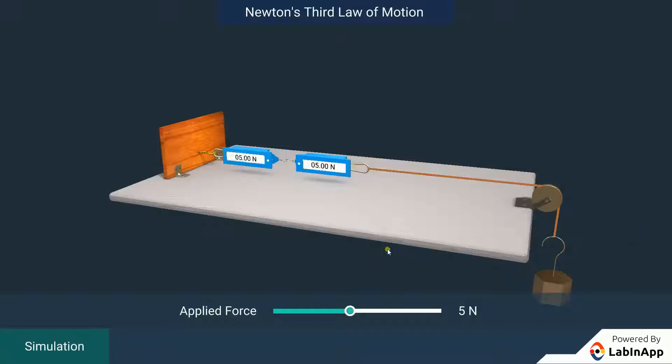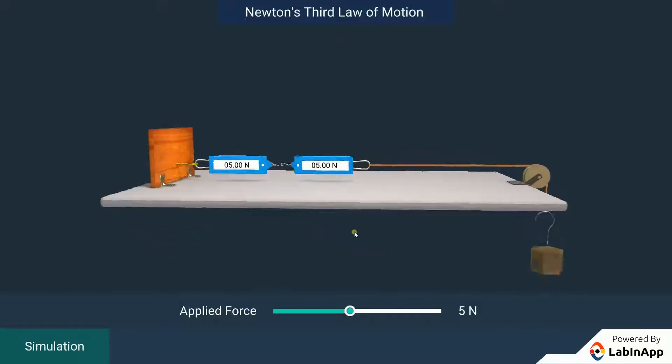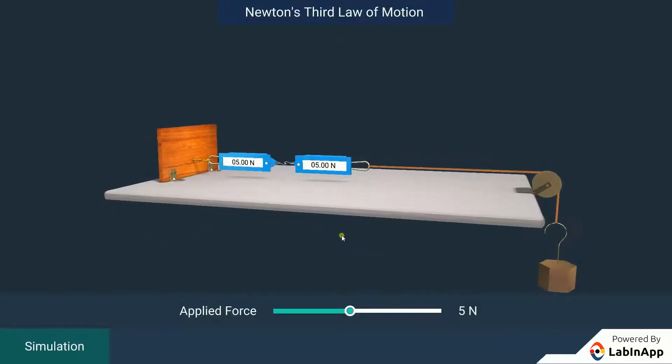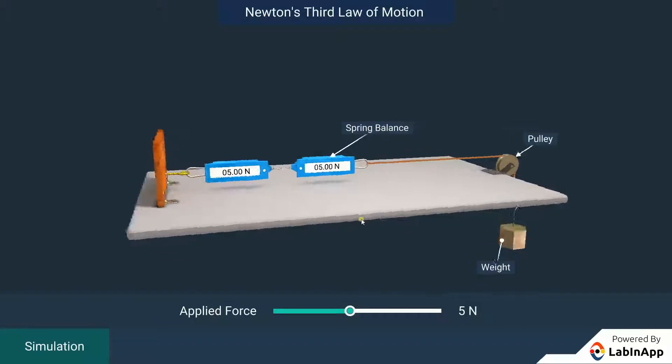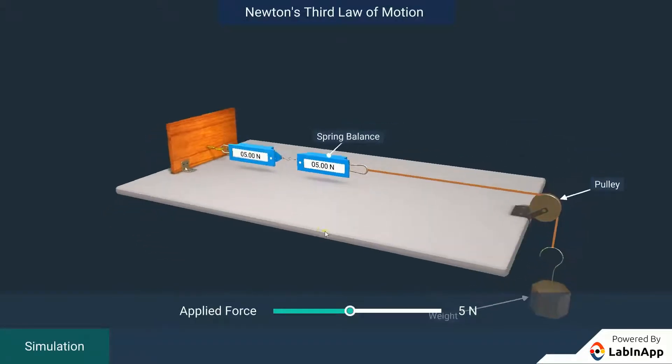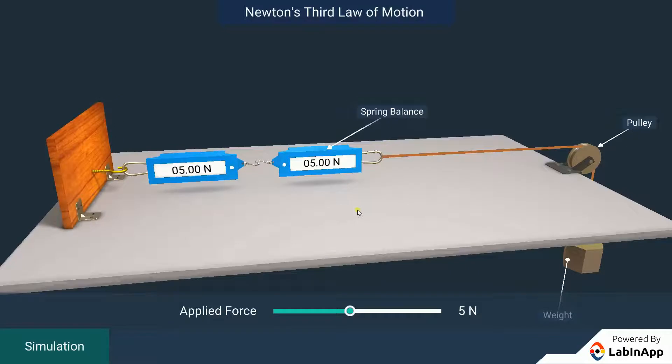Newton's third law of motion states that when one object exerts a force on another object, the second object instantaneously exerts a force back on the first. These two forces are always equal in magnitude but opposite in direction.